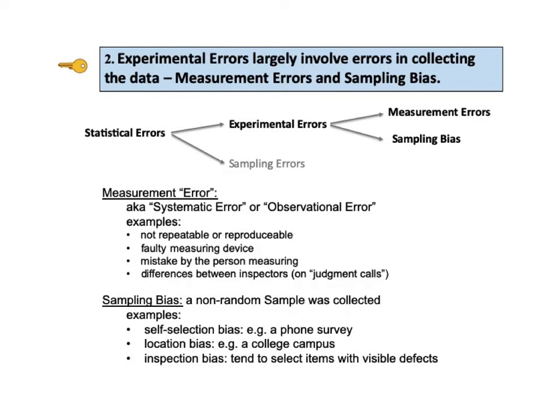The second type of experimental error is sampling bias, in which a non-random sample was collected. For example, with a phone survey done during the day, many people may be at work, or some won't answer unknown numbers. People who are lonely or less busy tend to answer and stay on the phone. There is also location bias — surveying people on a college campus skews demographics to ages 18 to 22. In inspection bias, visual inspectors tend to select items with an obvious defect.